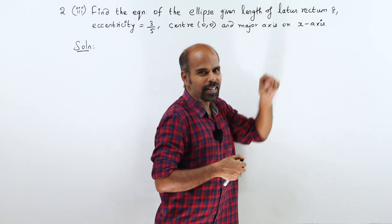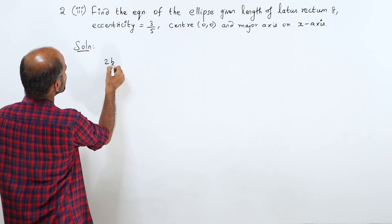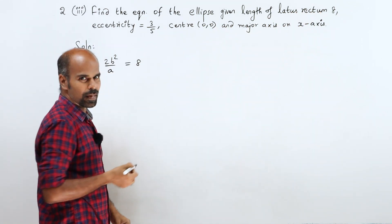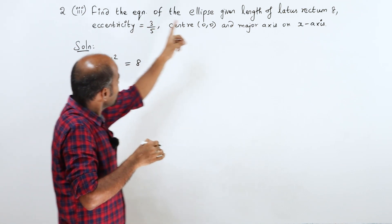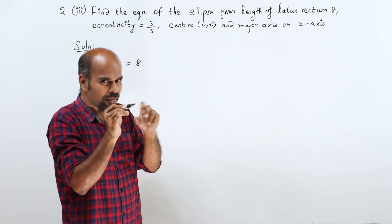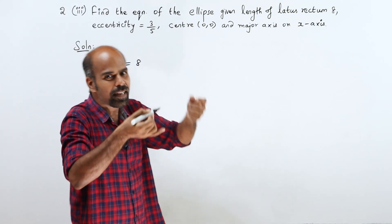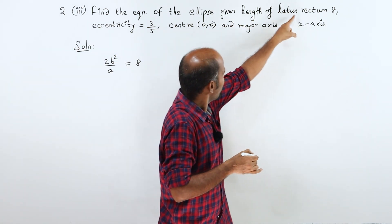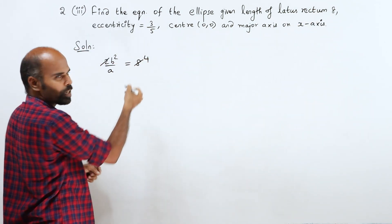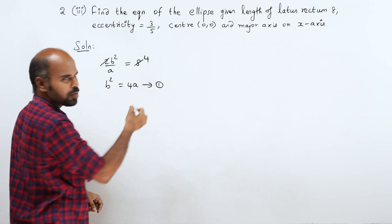Given: length of latus rectum is 8. The length of latus rectum formula is 2B squared by A. Since the length of latus rectum is 8, that is equal to 8. Example 5.15: Find the length of latus rectum of ellipse, that is 2B squared by A. So 2B squared by A is equal to 8. Cancelling, B squared is equal to 4A. This is equation number 1.